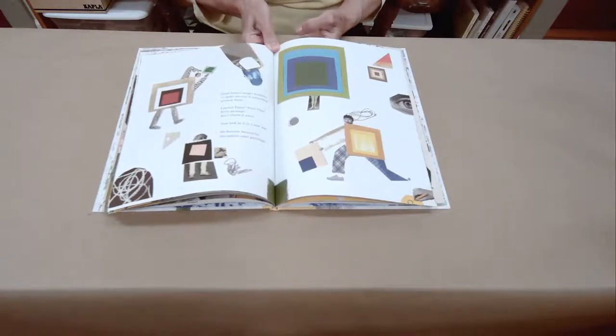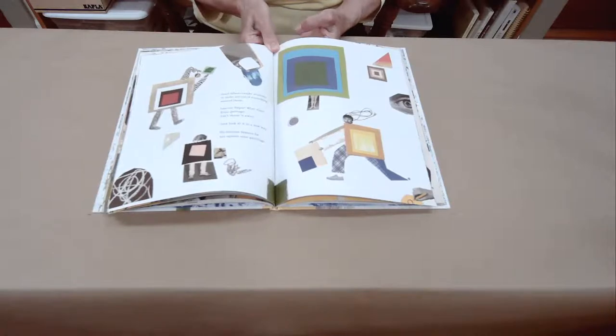At the museum, you will see one of the famous color squares by Joseph Albers in a gallery upstairs.